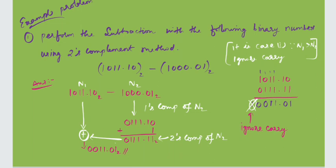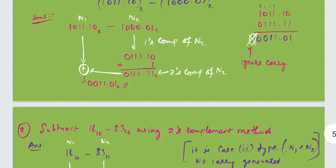After adding, a carry is generated. But we know in Case 1, if carry is generated we have to ignore it. The addition result shown on the right-hand side gives 00001.01, and the carry is generated but ignored because this is the two's complement method.